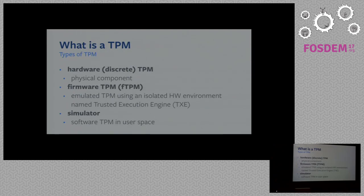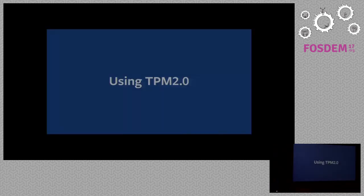There are three types of TPMs: hardware, firmware, and software. The hardware or discrete TPM is a physical component, tamper-proof, and it's the most secure of the three. Firmware TPM is typical on embedded platforms because it relies only on a CPU extension named Trusted Execution Engine. Software TPMs are used just for development — they are all in user space and run on top of the operating system.